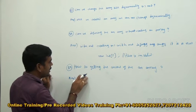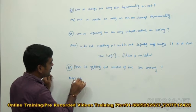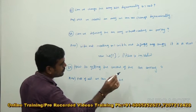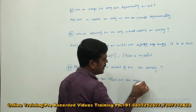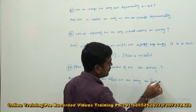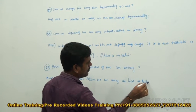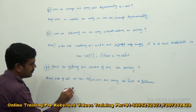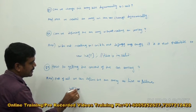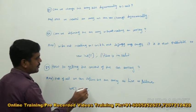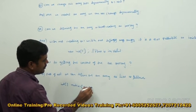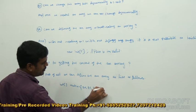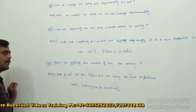First of all, we can define the array as follows. Here I am defining: int matrix[] = {20, 25, 30, 35, 40}. We can define the array like this.